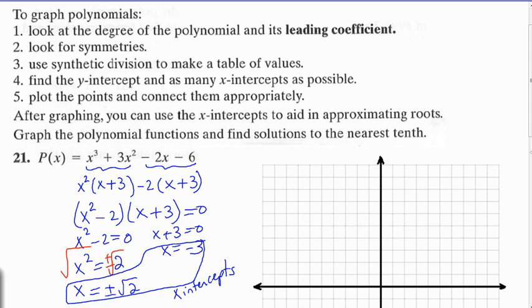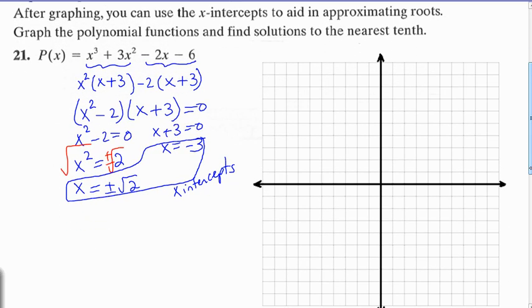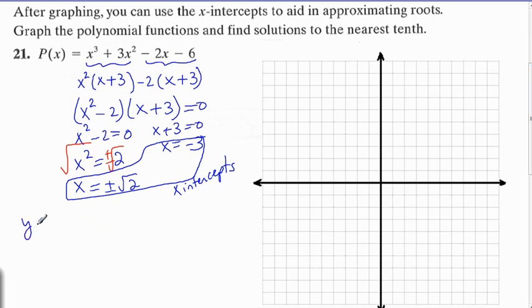Our y-intercept is P of 0. That means plug in 0 for x, which gives us 0 cubed plus 3 times 0 squared minus 2 times 0 minus 6, which is negative 6.